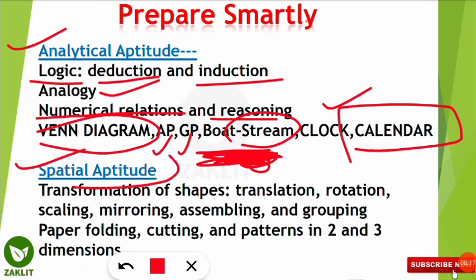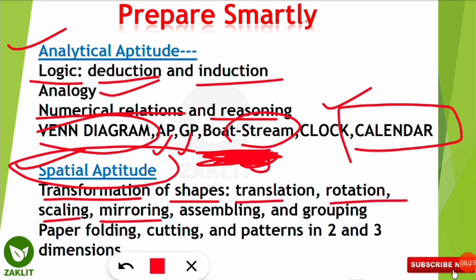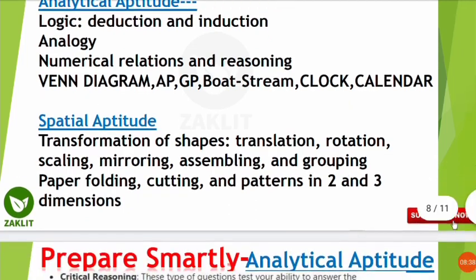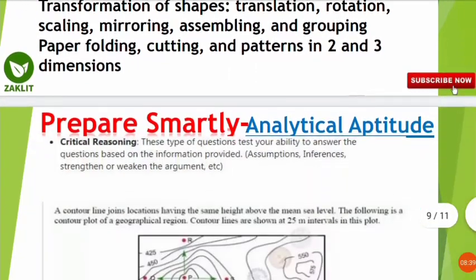Spatial aptitude is a new addition to the GATE paper and includes transformation of shapes — translation, rotation, scaling, mirroring — and assembling tasks like paper folding. These are very easy, especially for those who have seen banking exam papers. Now let's look at some examples of analytical aptitude, where your analytical skill is tested.